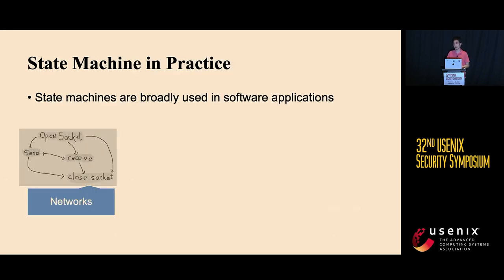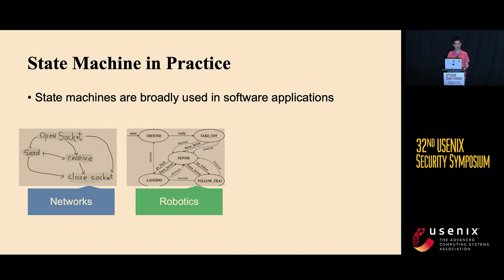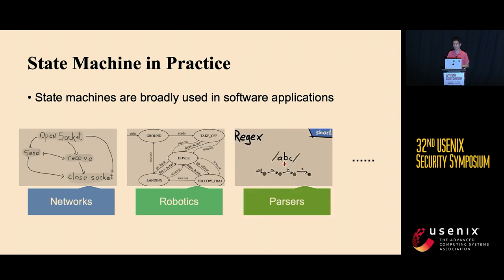State machines have been widely used in real-world applications. For example, a software system that implements a network protocol may use state machines to communicate. Robotics systems may leverage state machines to control system states and decide how the system interacts with the environment. There is also a special kind of parser typically implemented as state machines, used to parse regular expression-like messages, which are widely used in real-world network protocols.